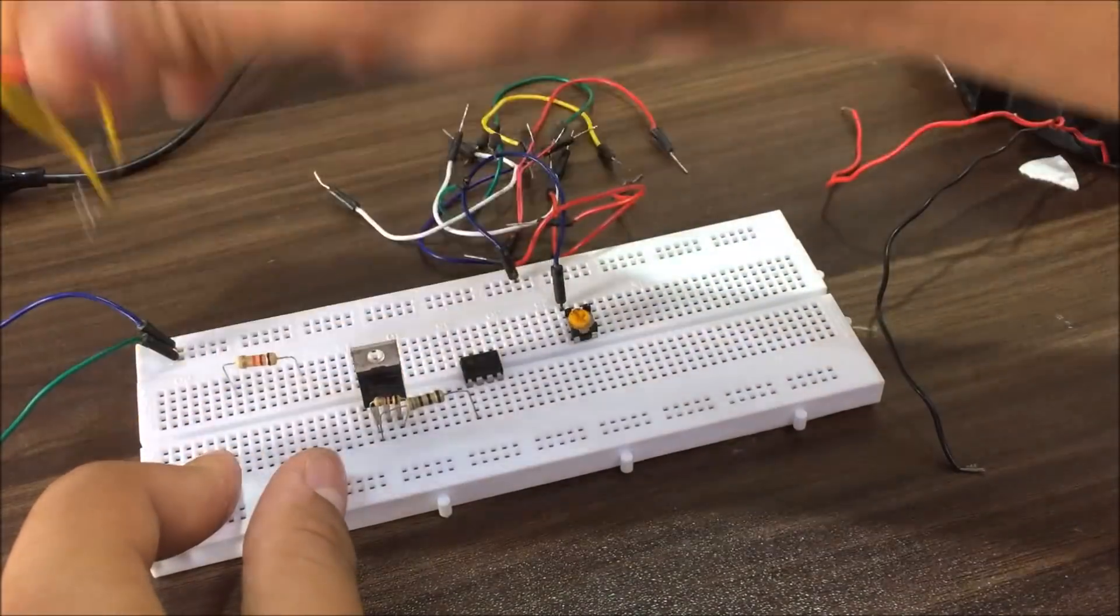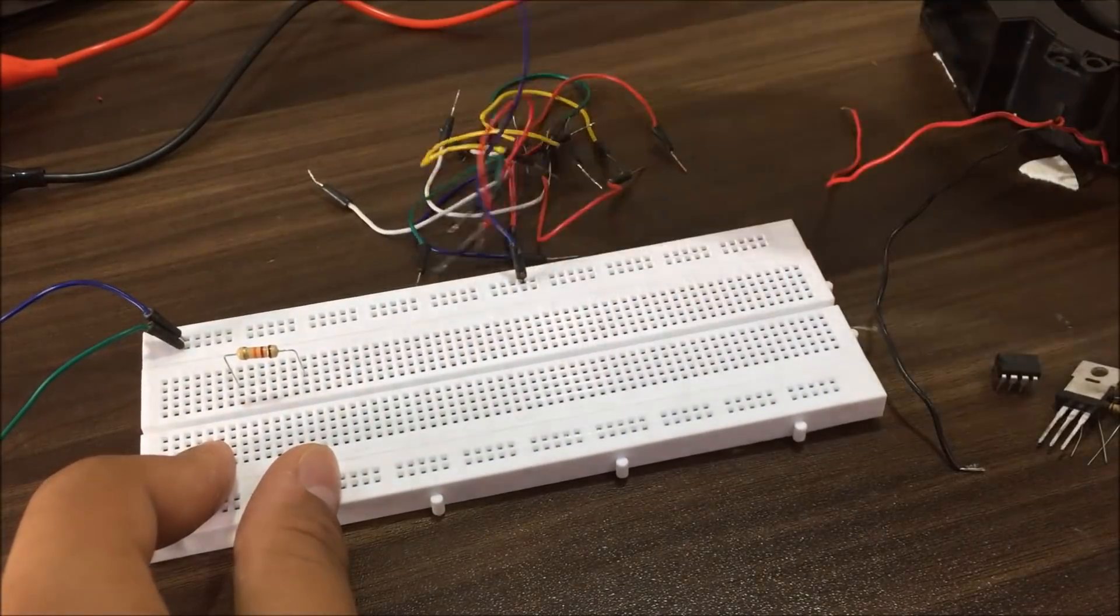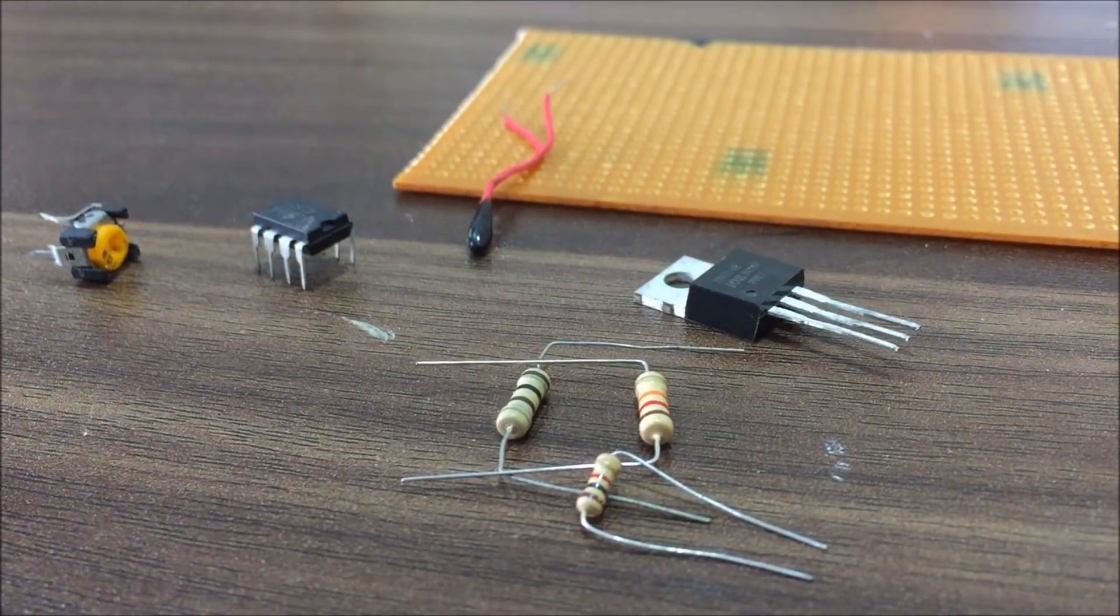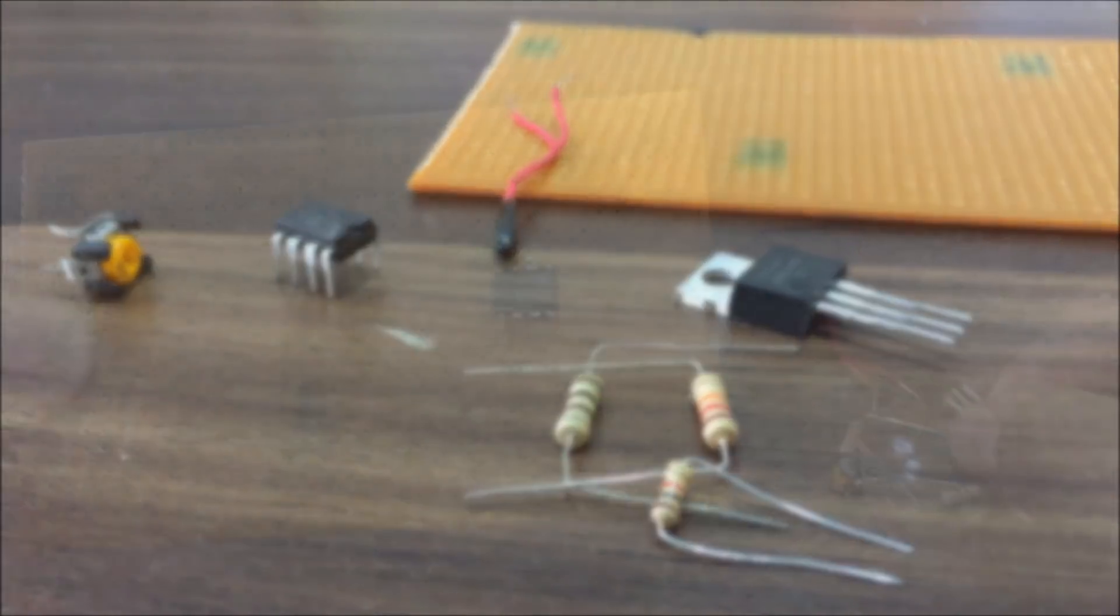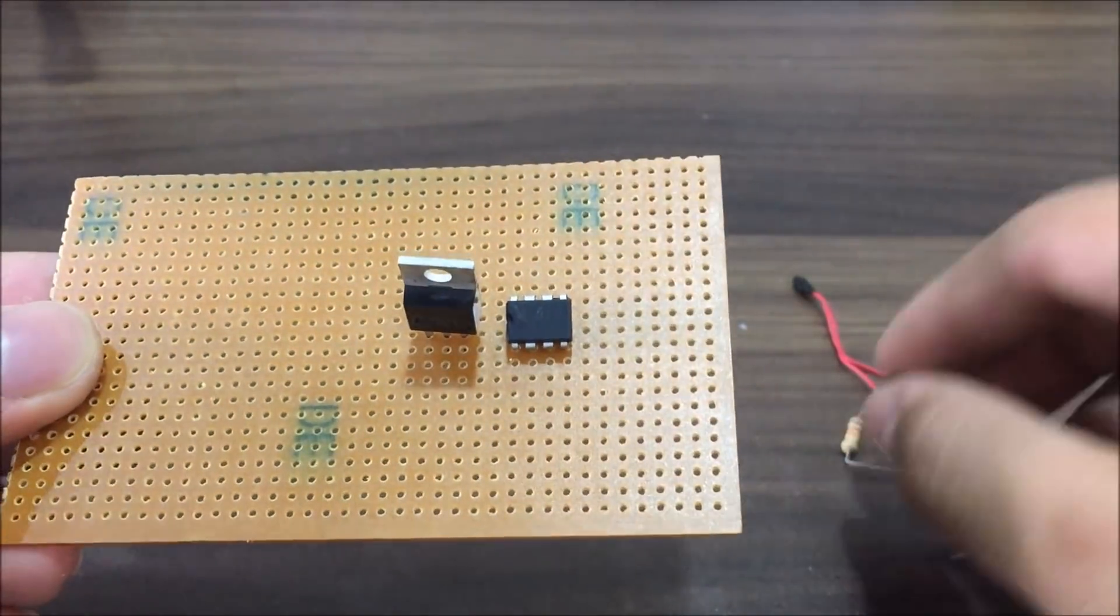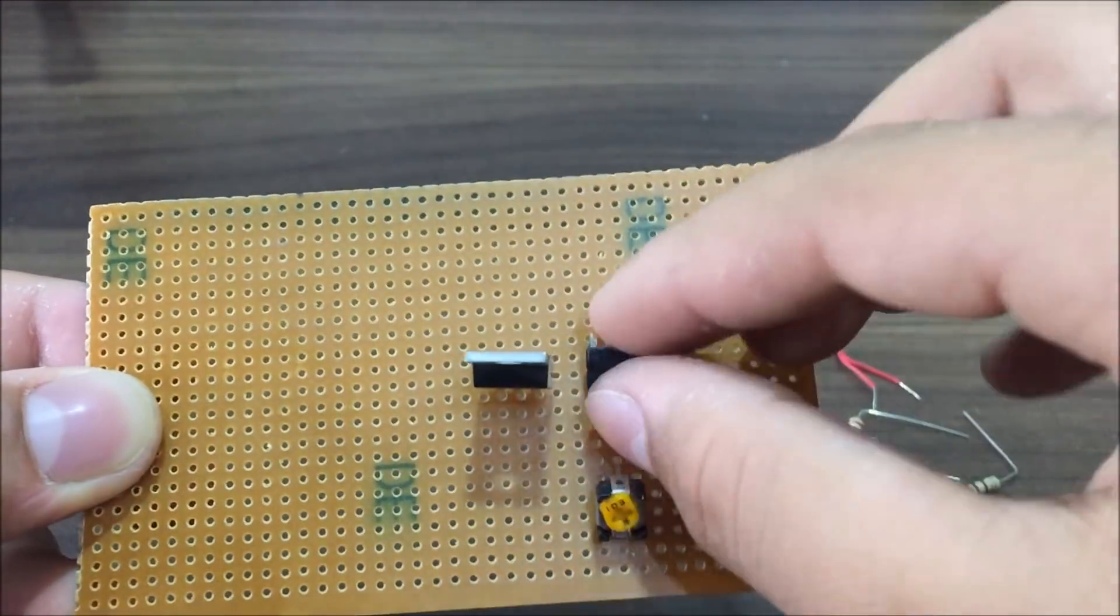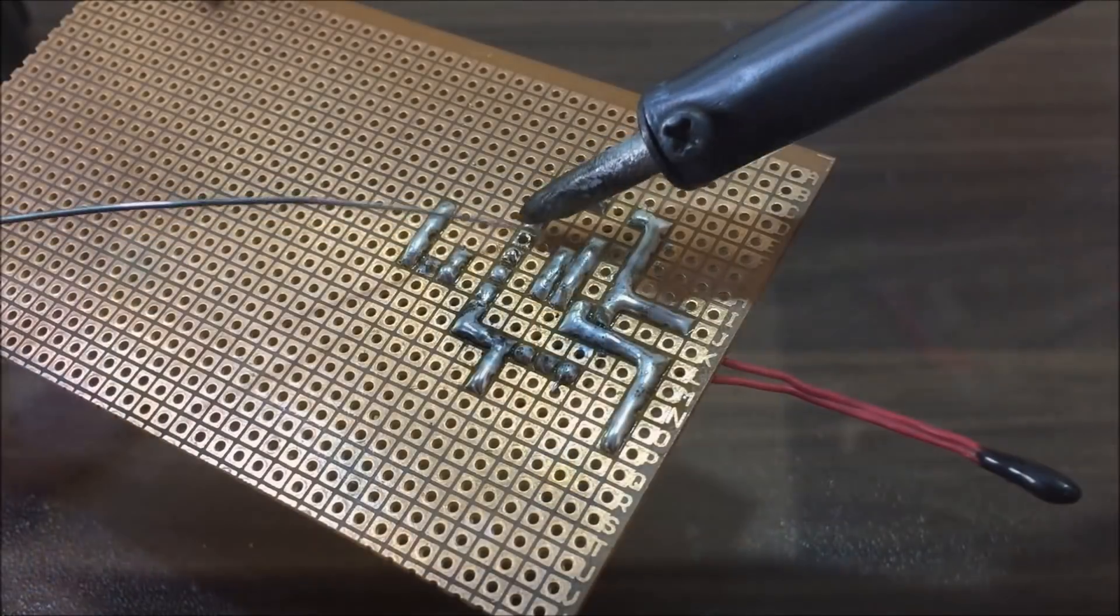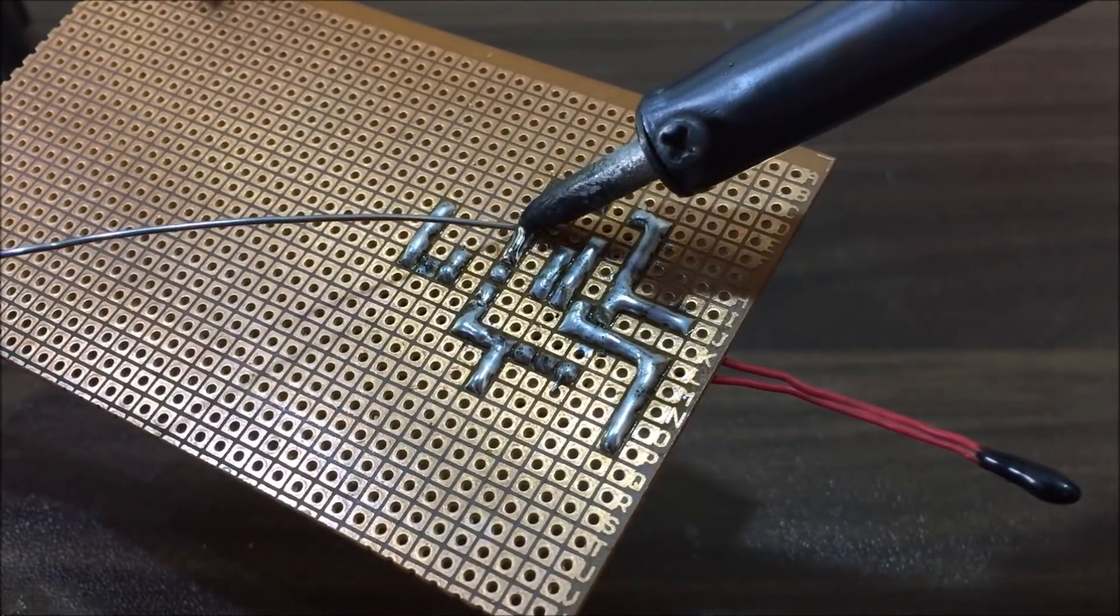When I am happy after the testing of circuit, I disconnect all the components from the breadboard and sort them out for soldering. Afterwards, I used the schematic as a reference and started creating a more permanent version on a piece of perfboard.